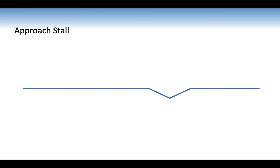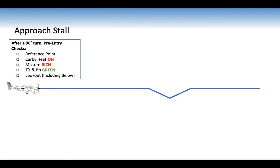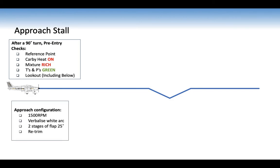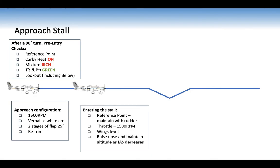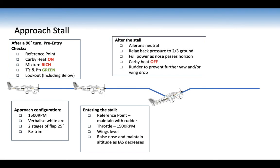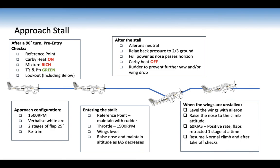For the approach stall, you find yourself in the approach configuration and quite slow, and a stall is occurring — these are the procedures to recover. You've done your HASSLE checks and pre-entry checks, put the aeroplane in the approach configuration: 1,500 RPM, verbalise white arc, two stages of flaps, and trim. Reference point, maintain rudder, leave at 1,500 RPM, wings level, raise the nose, and maintain altitude as indicated airspeed decreases. It will take longer to stall since we've got flaps and our stall speed decreases. After the stall: ailerons neutral, relax back pressure to two-thirds ground one-third sky, then full power as nose passes horizon, carb heat off, and rudder to prevent further yaw and wing drop. When wings are un-stalled, level wings with aileron, raise nose, climb attitude after 60 knots, positive rate of climb, retract flaps one stage at a time, and resume normal climb and after-takeoff checks.